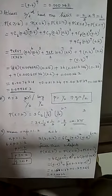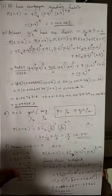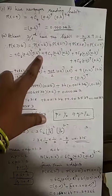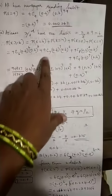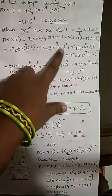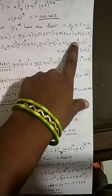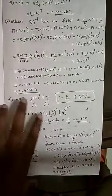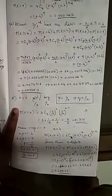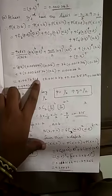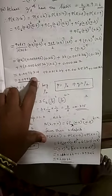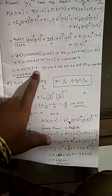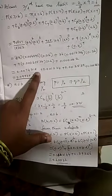We substitute: 9C6·(0.4)^6·(0.6)^3 + 9C7·(0.4)^7·(0.6)^2 + 9C8·(0.4)^8·(0.6)^1 + 9C9·(0.4)^9·(0.6)^0. You have to multiply carefully — even a small decimal will make a difference. Do not round off; you can take up to 6 digits after the decimal.